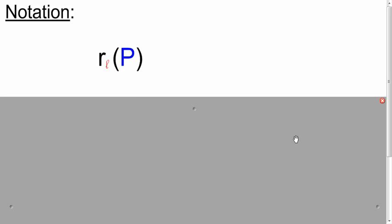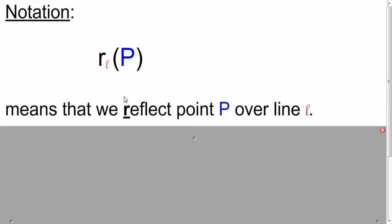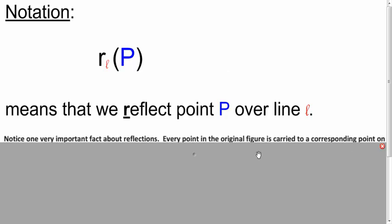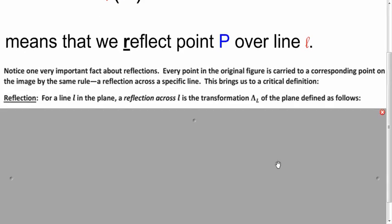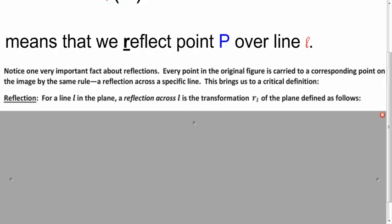Here's the notation for a reflection. Use lowercase r this time. And the one parameter is the line that you're reflecting through. So we're reflecting point P over line L in this case. Here's the formal definition.